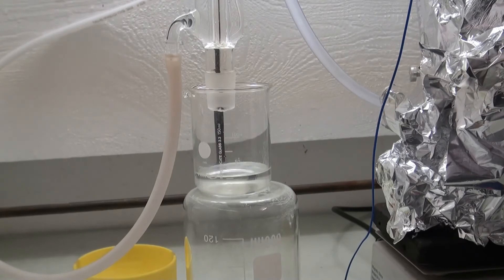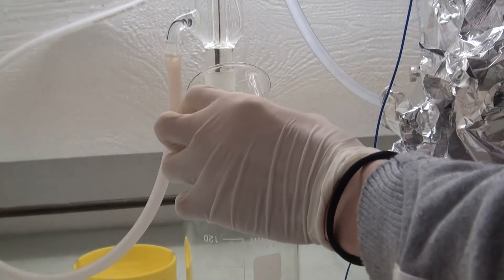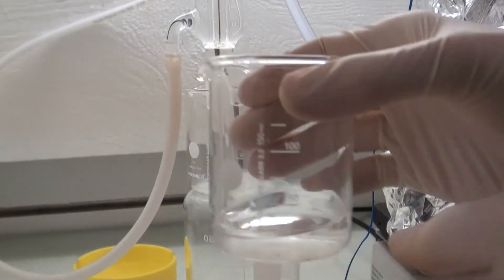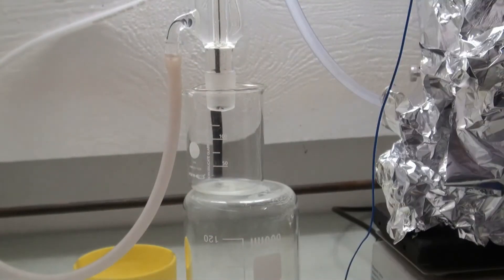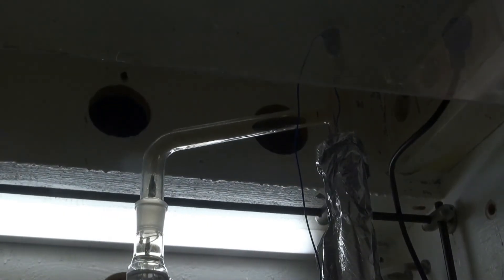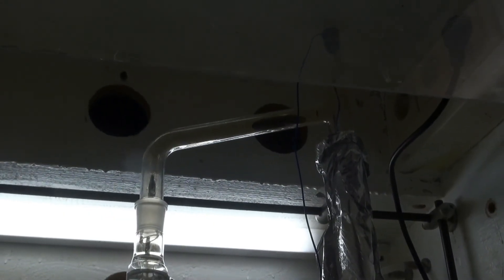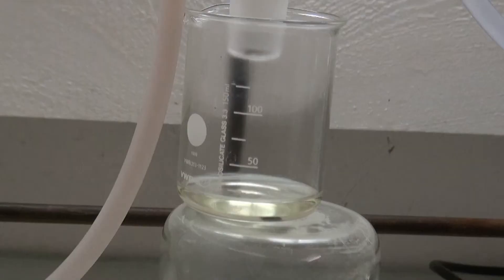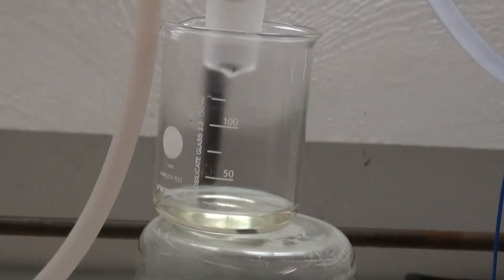After two more hours the temperature had reached 120C, and the collection beaker was changed to collect the azeotropic nitric acid. The distilling arm also started to be filled with nitrogen dioxide, and the distillate coming over became slightly yellow.